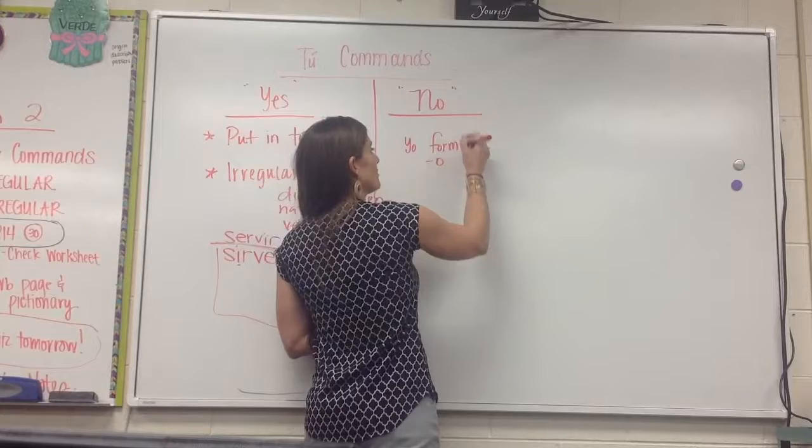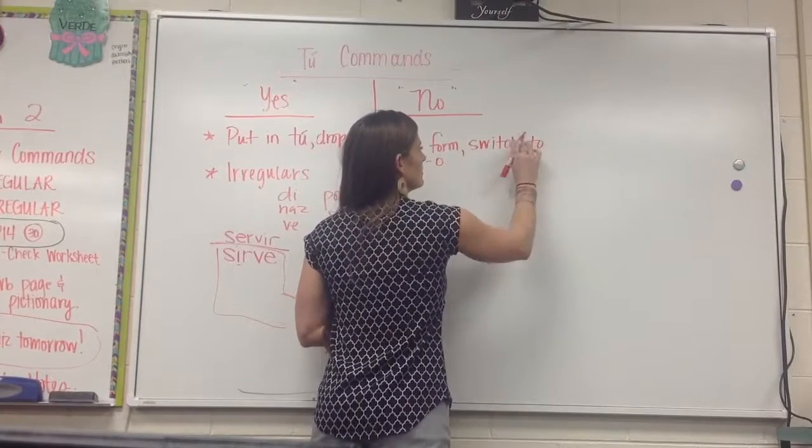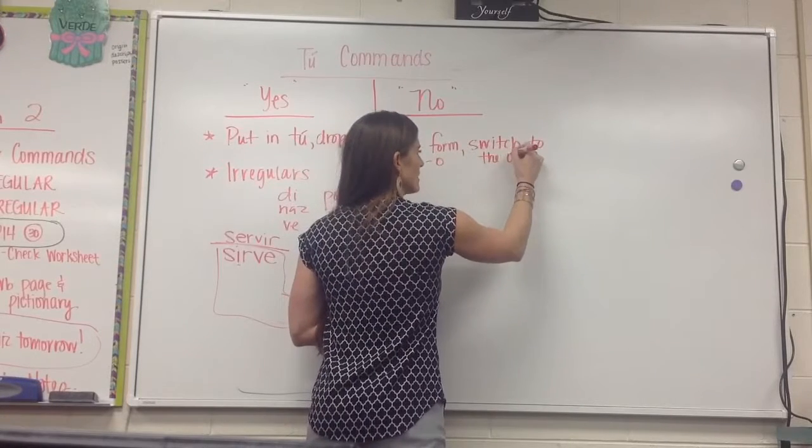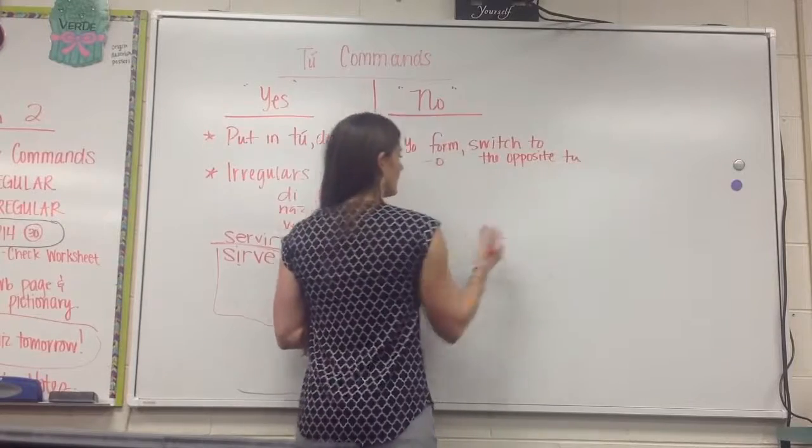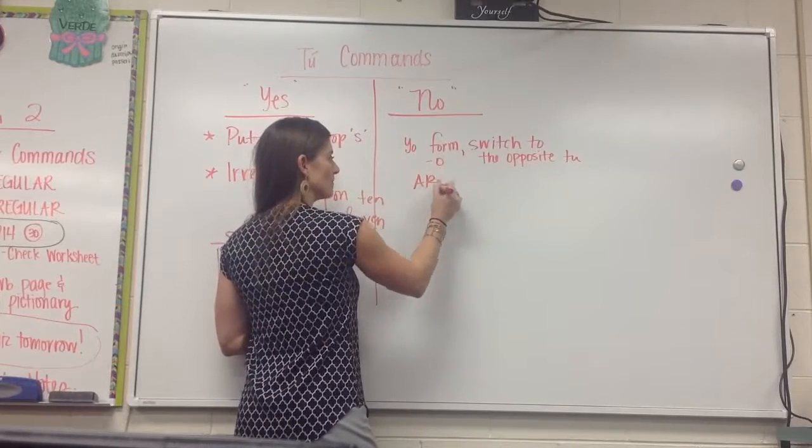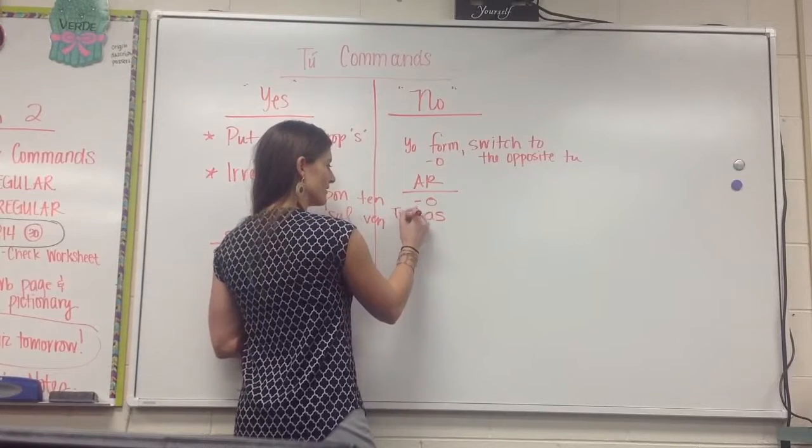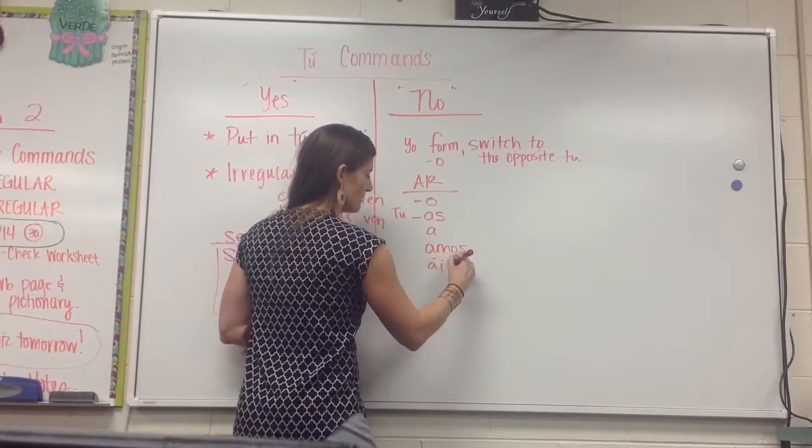Go to the yo form? No, go to the yo, switch to the opposite tú. You might be asking yourself, what in the world does that mean? Switch to the opposite tú. AR verbs. The yo form ends with an o, the tú form ends with an as. Then we go o, as, a, amos, áis, and so on.